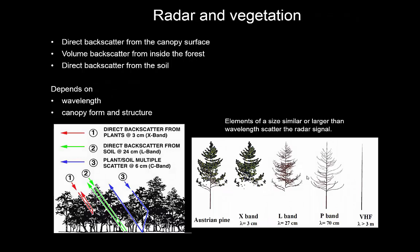Also, depending on the wavelength you're measuring in, you might see different parts of the vegetation, or the vegetation might impact your returns differently. Here's a nice example for four bands. If you look at a short wavelength — 3 centimeters in the X-band — the canopy, leaves, and needles are really interacting with the radiation. Whereas at longer wavelengths of 27 centimeters with the L-band, it's really the branches. And in the P-band at even longer wavelengths, it's only the big branches and in the radio range, around 3 meters, it might only be the actual tree trunk that has any effect on the signal — if any. So the wavelength and the size of the objects it interacts with are of similar magnitude.